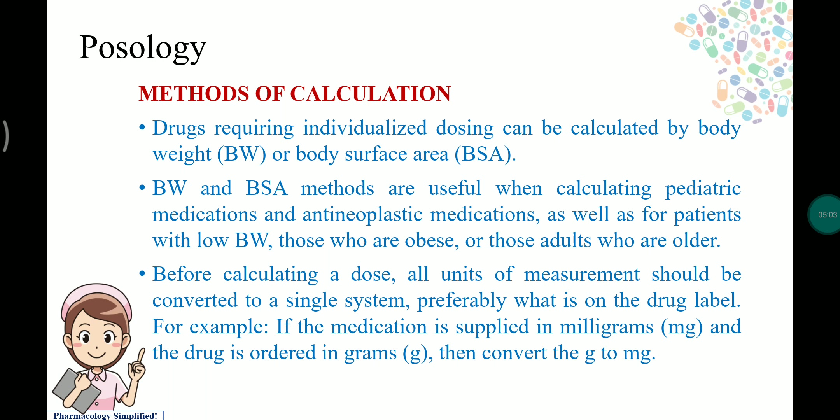Doses are calculated based on individual body weight or body surface area. These two methods are useful for pediatric medications, anti-neoplastic medications, as well as for low body weight or obese patients — that is, those other than normal adults.